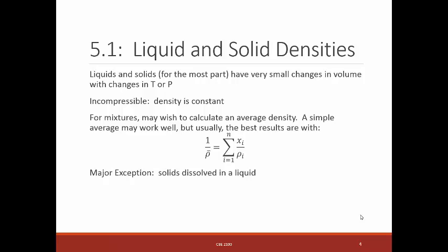But if I have a mixture, I need to be able to deal with that. So for mixtures, I'm going to want to calculate an average density. You can use a simple average. That may work okay. But what people have found works the best is this very complicated looking expression. So basically you're taking the reciprocal of the average of the reciprocals.